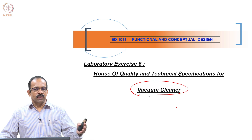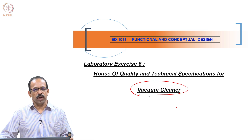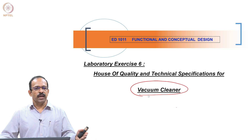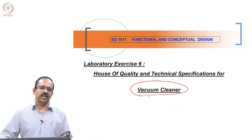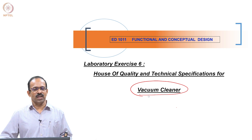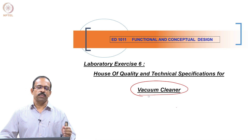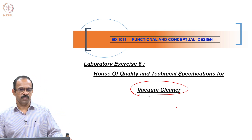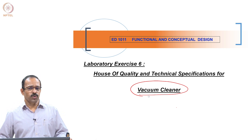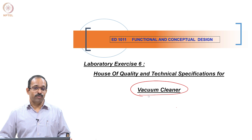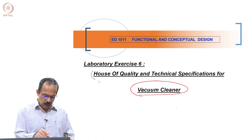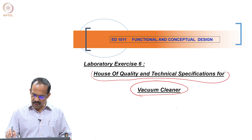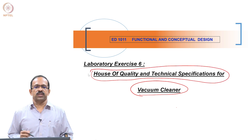As usual, we will do a dissection of the product, try to identify all the main functions of the product, get all the parts identified, and then look at each part and how it is contributing to the main function of the product. As an exercise to reinforce our theoretical learning, we will be preparing a house of quality and technical specification for this product.